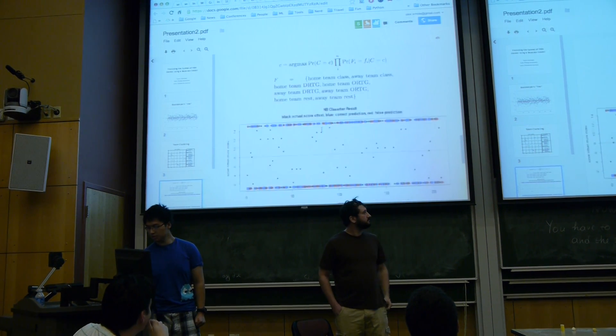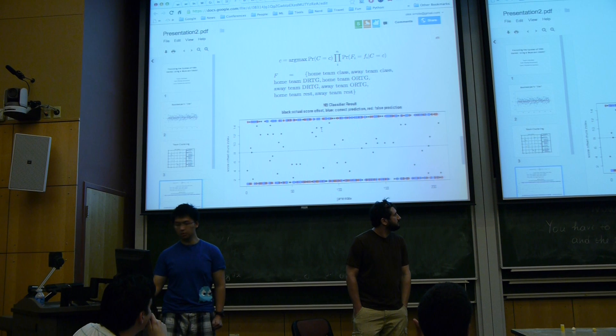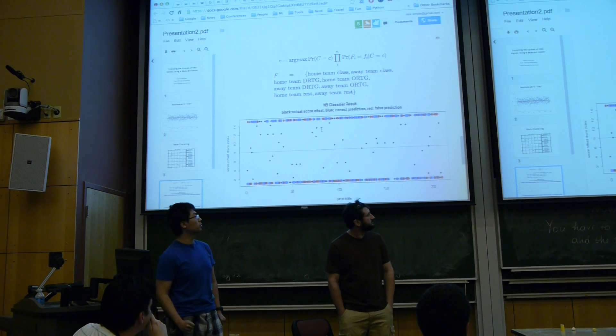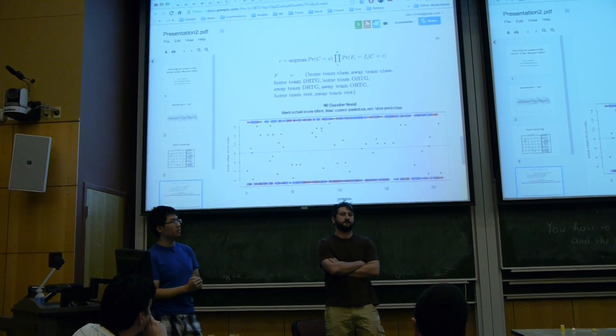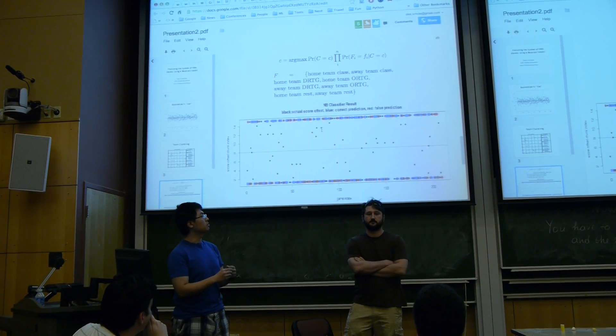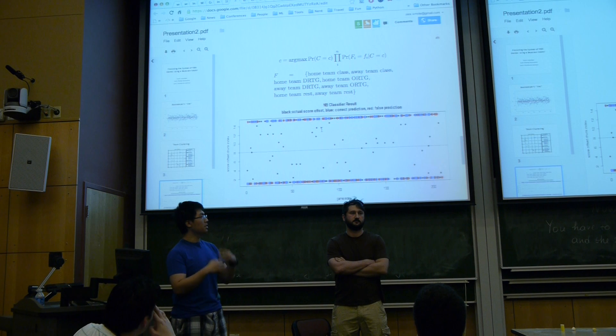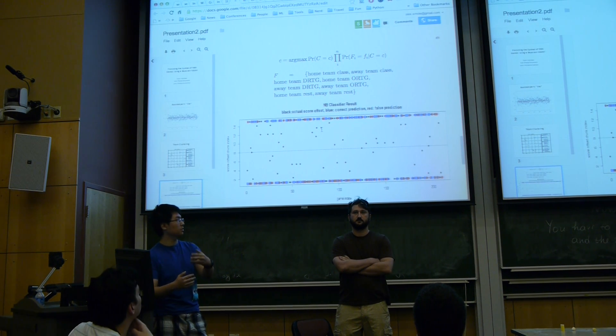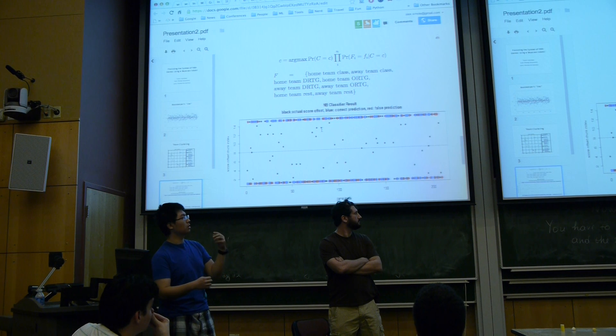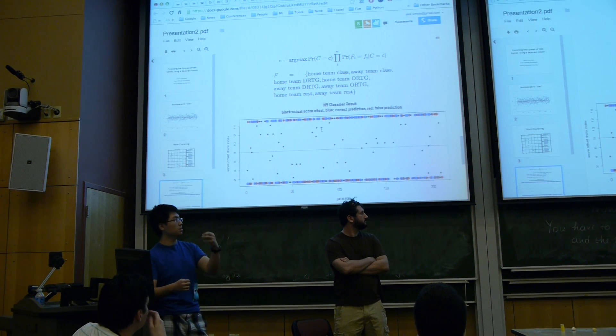So in terms of our Naive Bayes model, this is actually the model we used. The features we used is the home and away team clustering, the home team defense and offensive score against the team in that opponent's cluster, and then the away team's ratings against the teams in the home team's cluster.